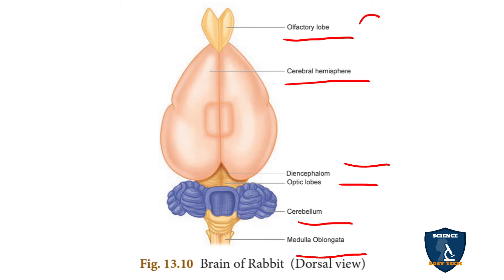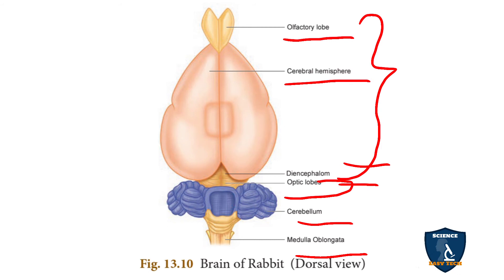From prosencephalon to diencephalon it is the prosencephalon, that is the forebrain. The optic lobe region is the midbrain, called mesencephalon. The hindbrain is called rhombencephalon and consists of cerebellum, medulla oblongata, and pons variolae.